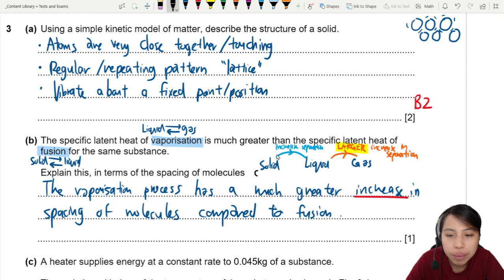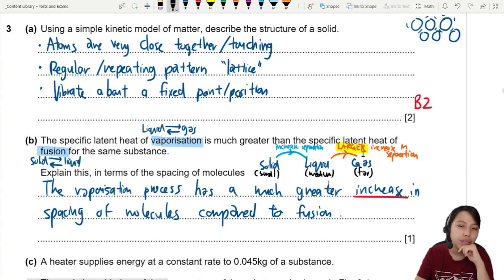Because if you just talk about separation, then this one is far separation, small separation. This one is medium separation. Small, medium, far, doesn't really tell us anything. We're going to talk about the increase in separation. That's a B1 mark here for talking about the increase.